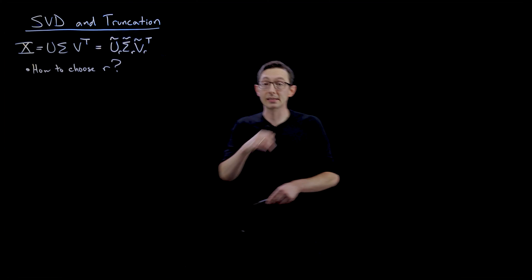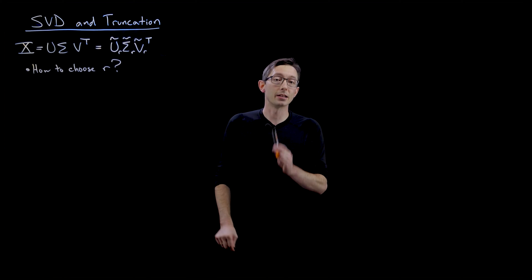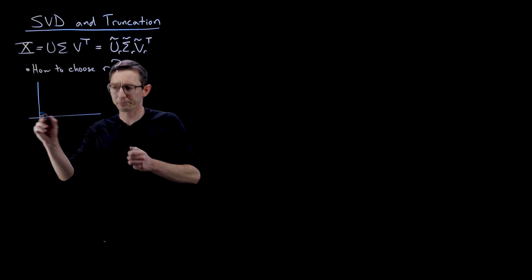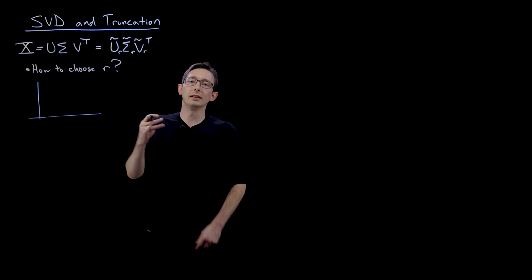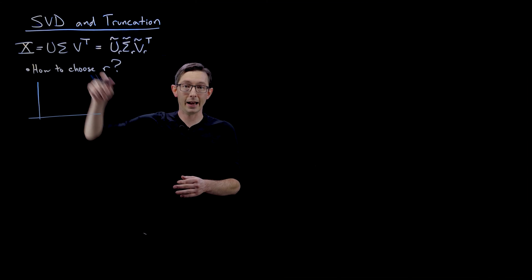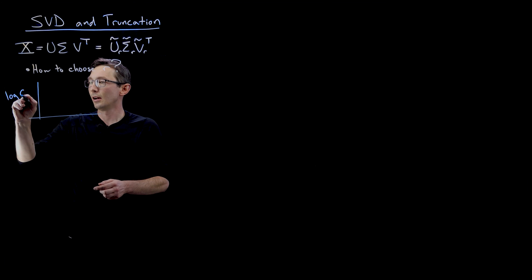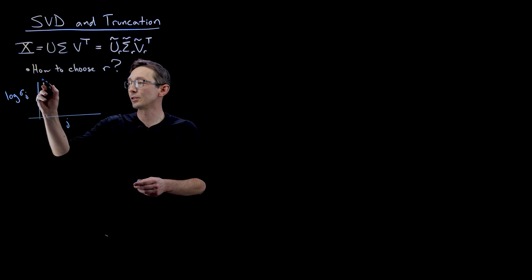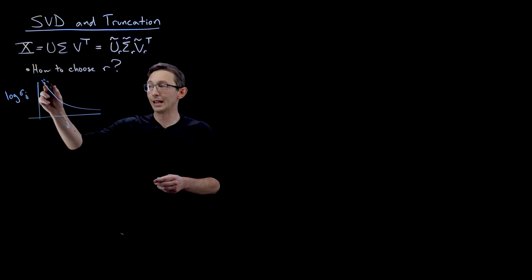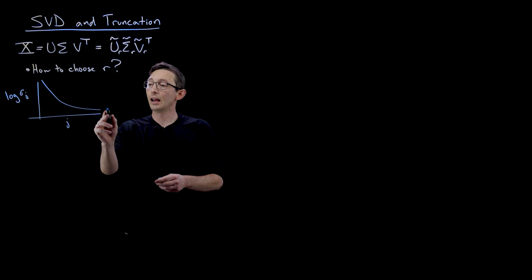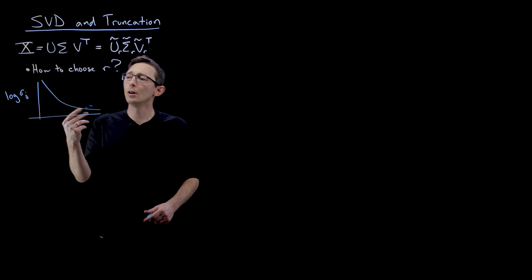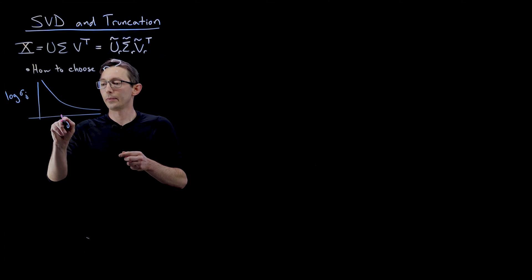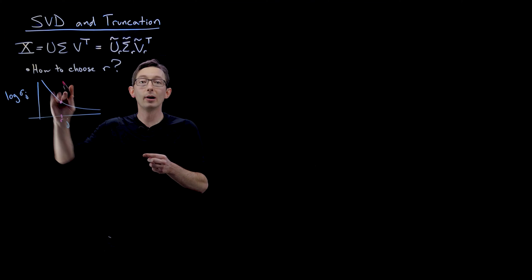And there are all kinds of heuristics and rules of thumb to do this. Oftentimes what you'll do is you'll plot the log of the singular values in the diagonal of sigma. So you'll plot the log of sigma j versus j. And you hope that your distribution looks something like that where there's some really energetic singular values and then some that are really small. And so what people often do is they'll pick this rank r by identifying something like an elbow where that goes from being high energy to low energy, high variance to low variance.